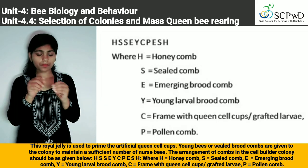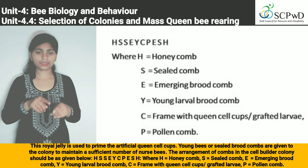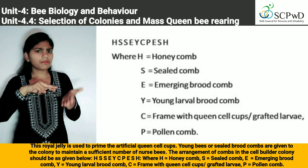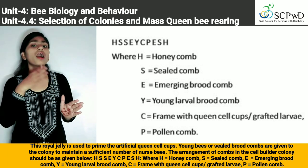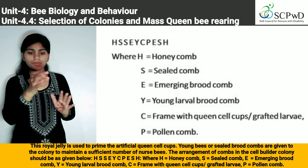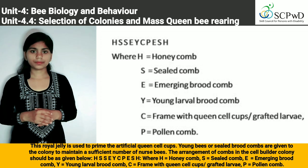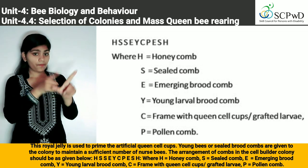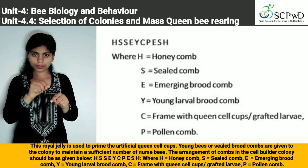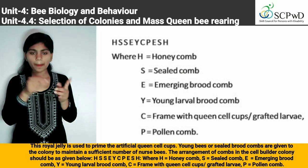The arrangement of combs in the cell builder colony should be as follows: H-S-S-E-Y-C-P-E-S-H, where H = honeycomb, S = sealed brood combs, E = emerging brood combs, Y = young larval brood combs, C = frame with queen cell cups or grafted larvae, and P = pollen combs.